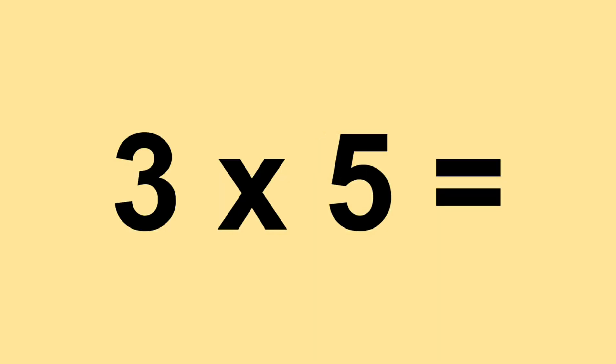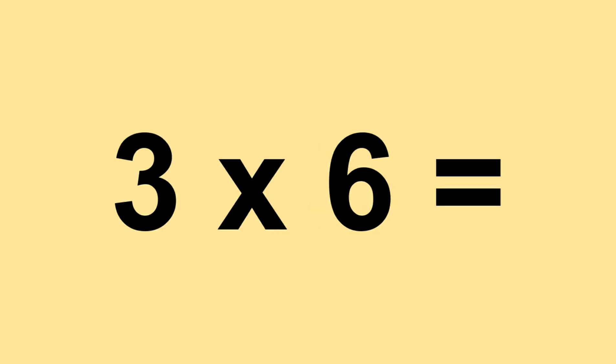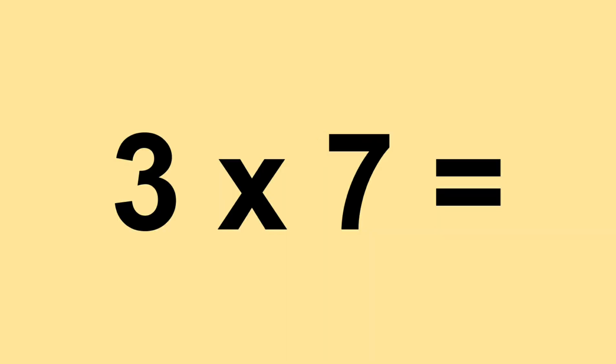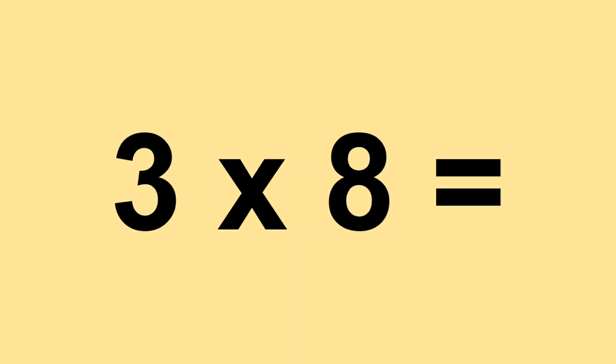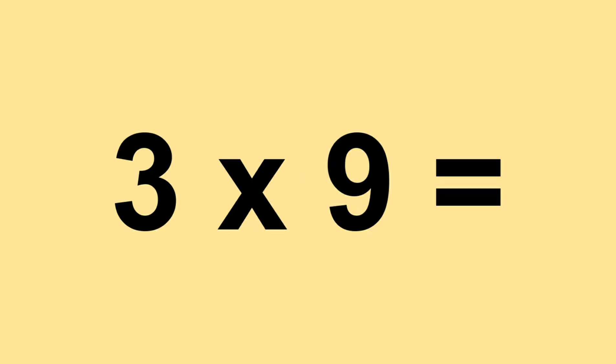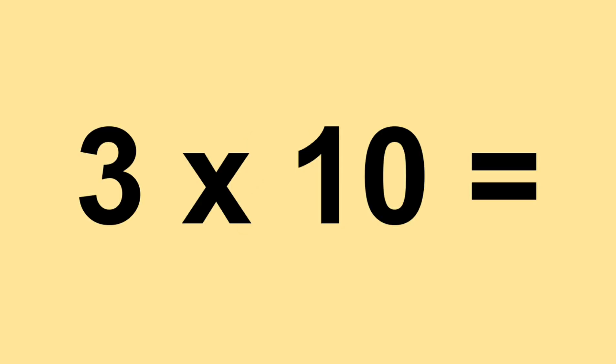Three times five equals fifteen. Three times six equals eighteen. Three times seven equals twenty-one. Three times eight equals twenty-four. Three times nine equals twenty-seven.